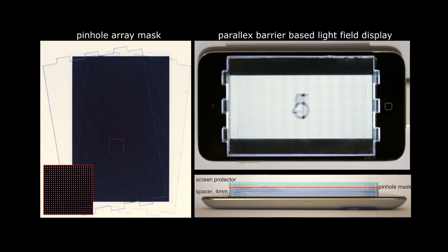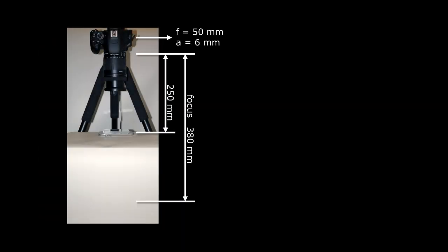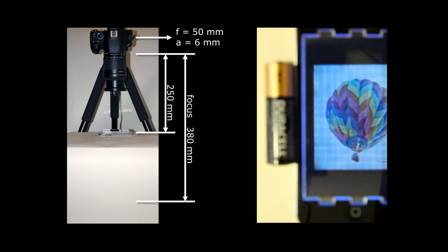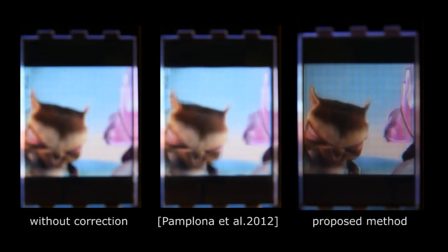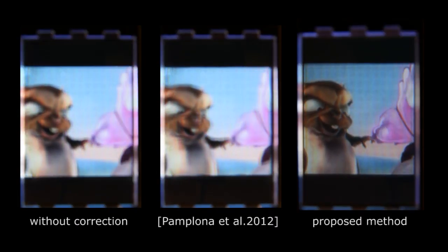For the prototype and experiment, we build a light field display using a parallax barrier on an iPod Touch. The camera generates a minus-6 diopter hyperopic eye with a 6mm diameter pupil. On the right is a blurred scene with a corrected image. Here we show the comparison using a short animation.